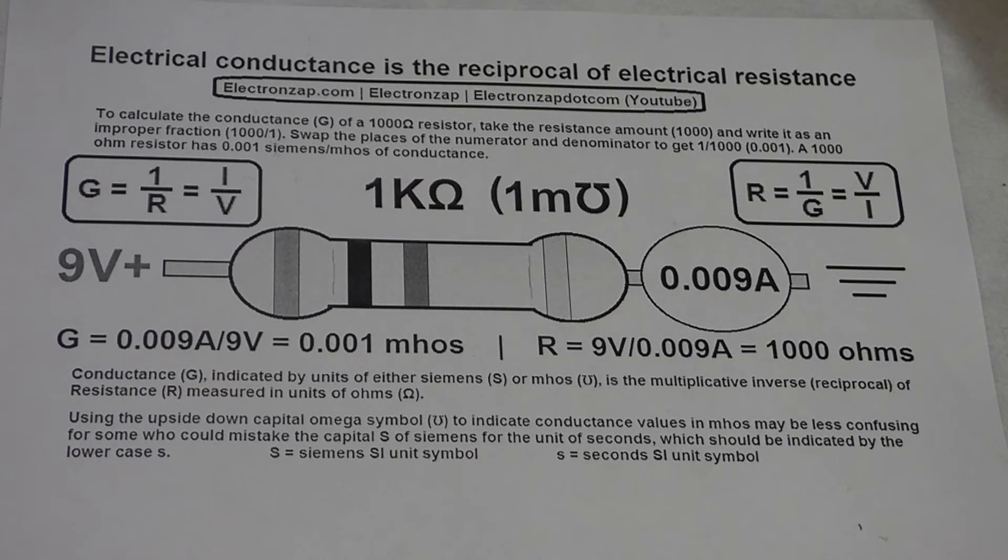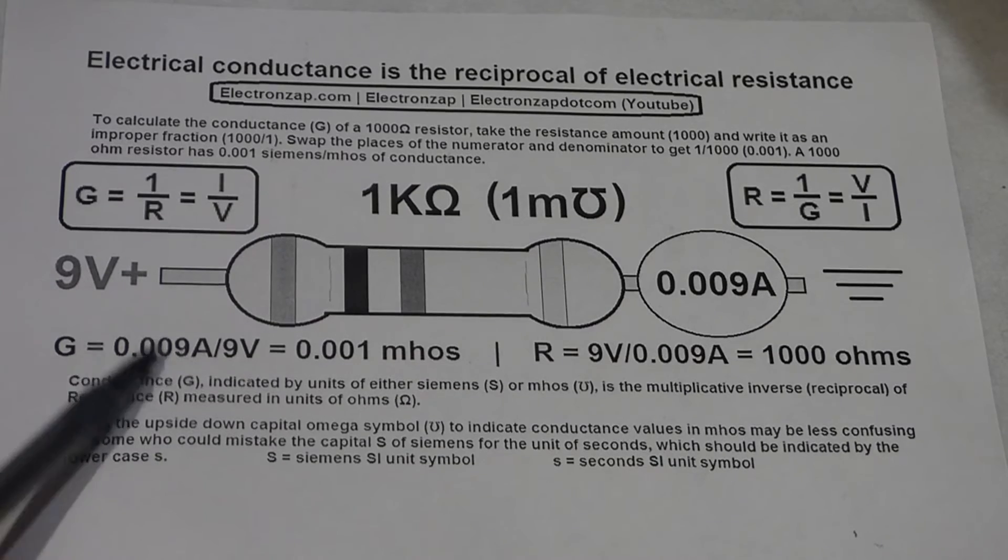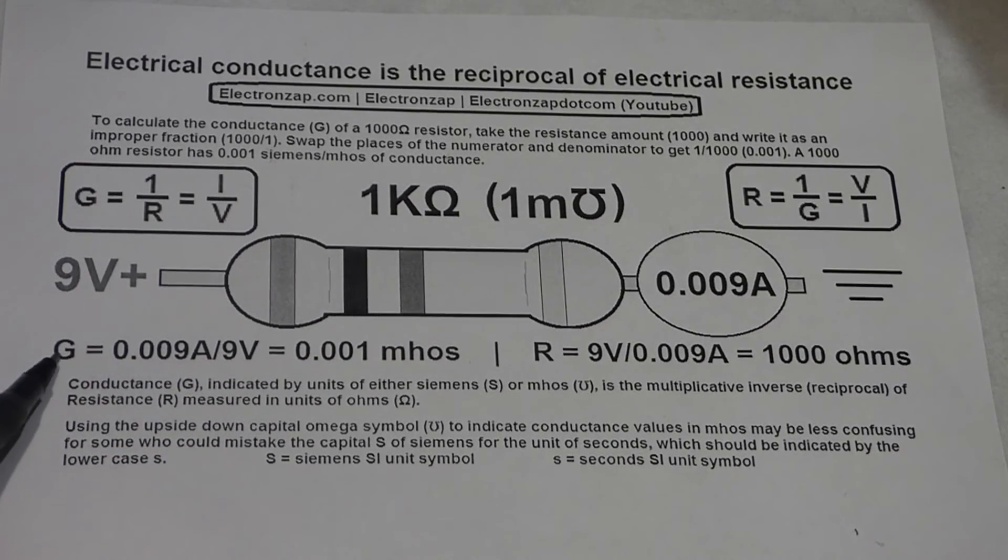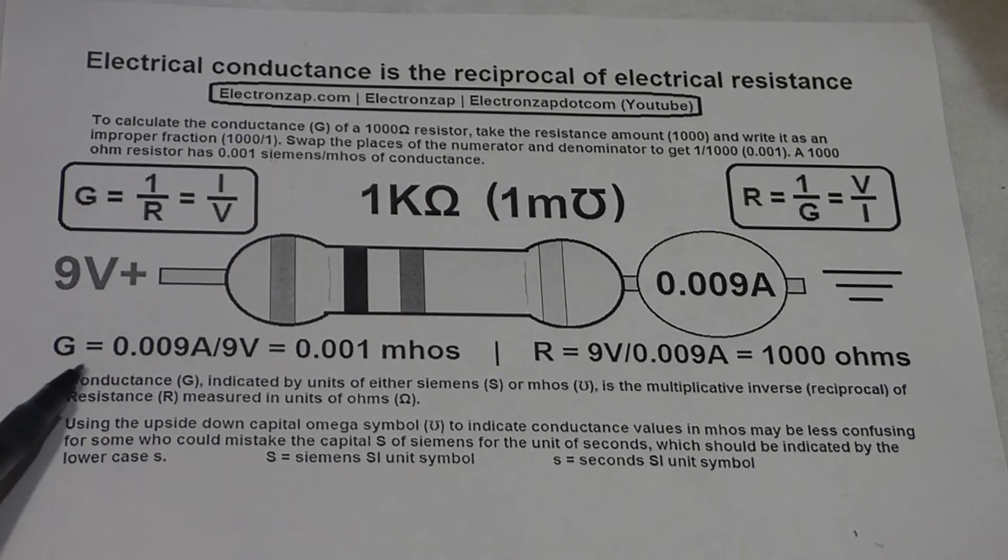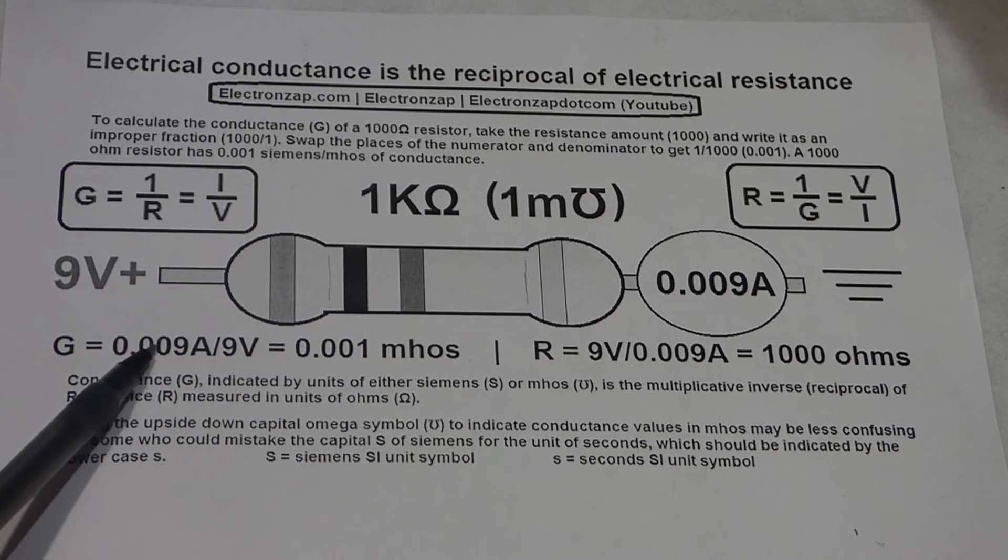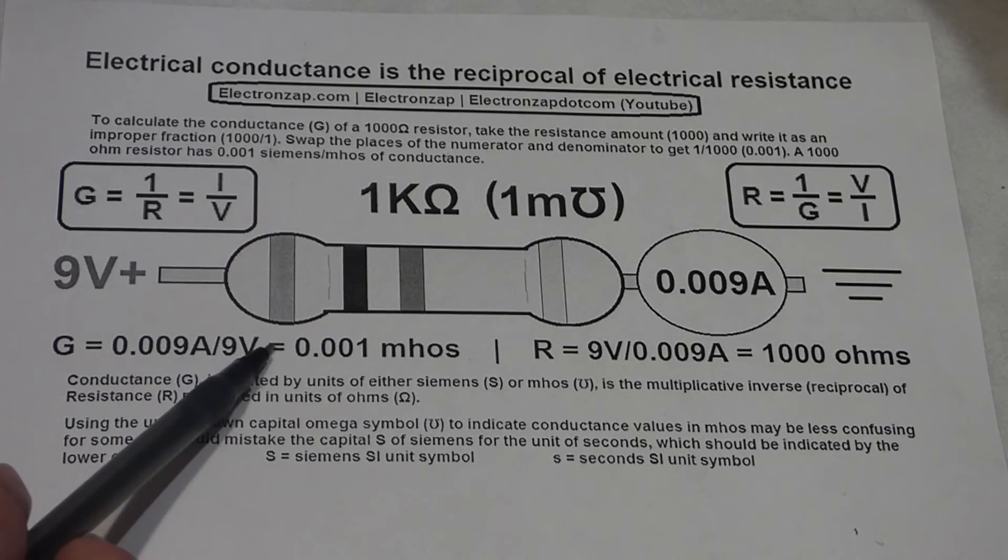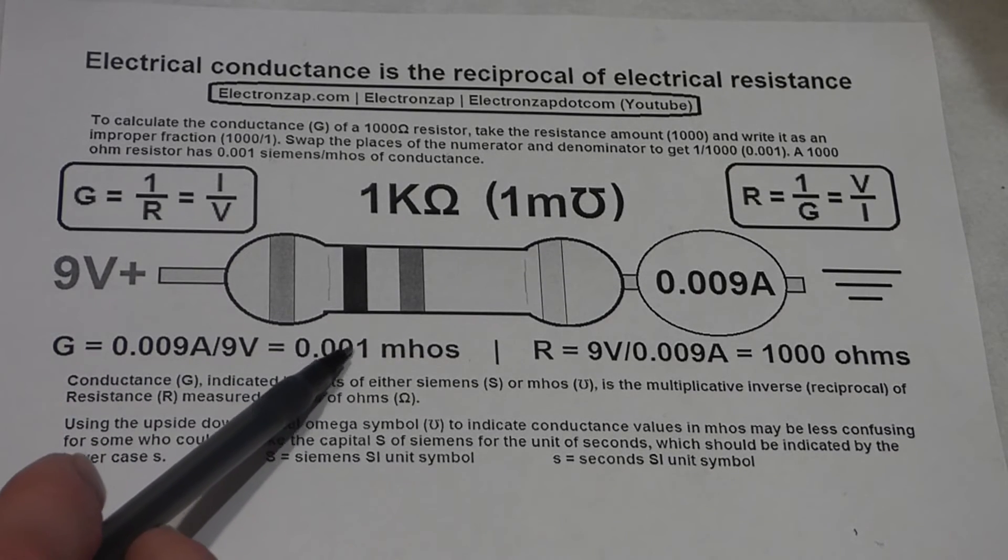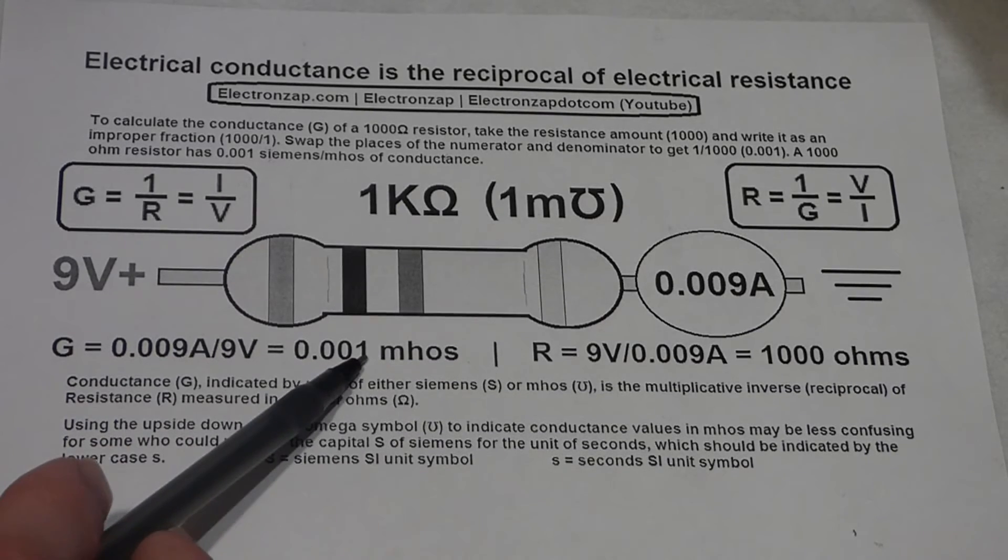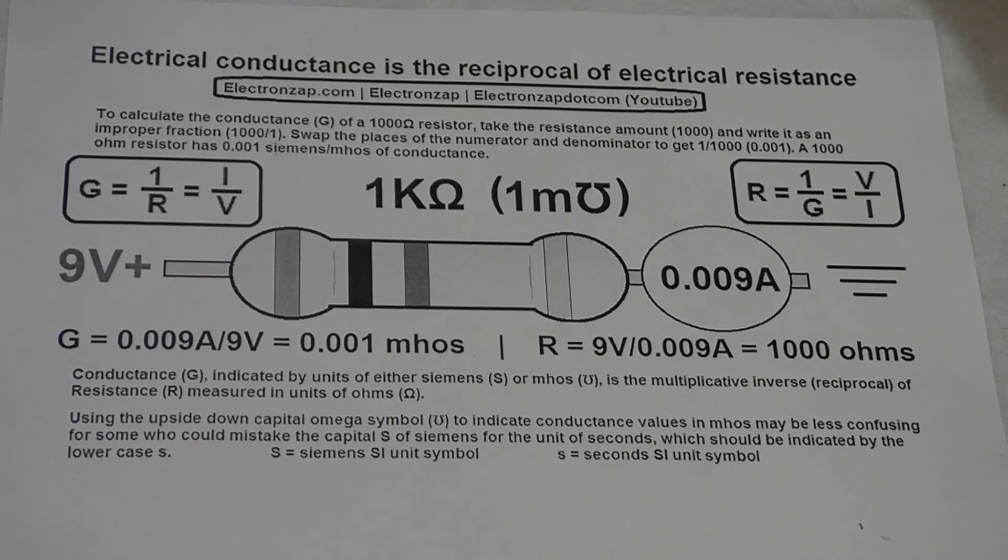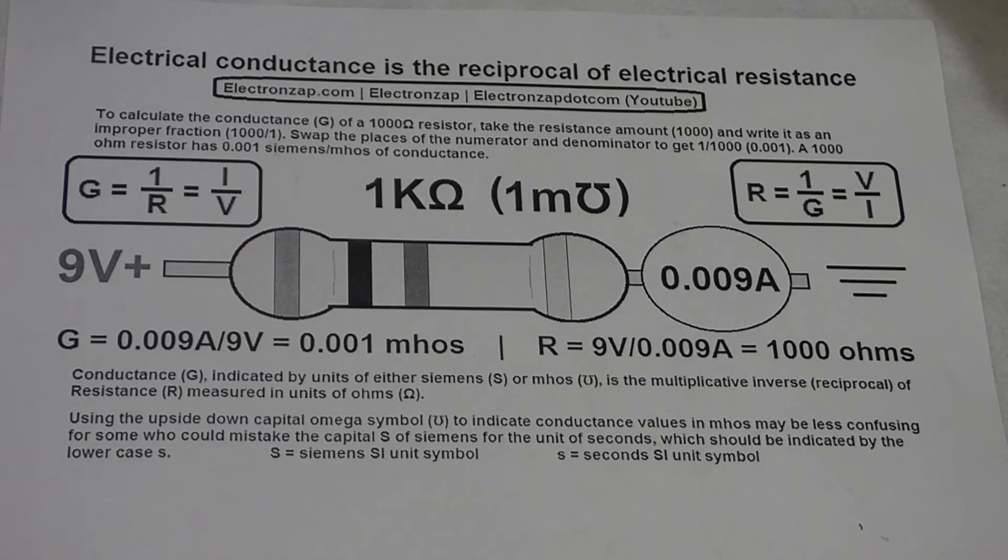You can use the same basic Ohm's law to get conductance. But this time, current is divided by voltage. So 0.009 amps divided by 9 is 0.001 Mhos, so that's 1 millimho.